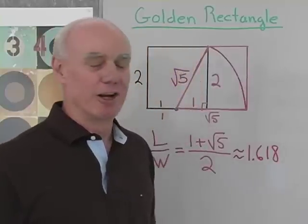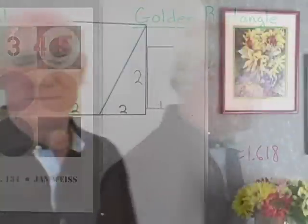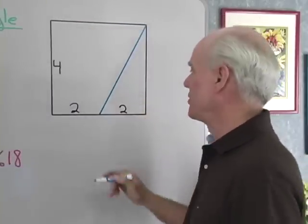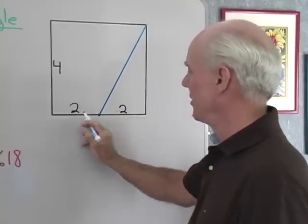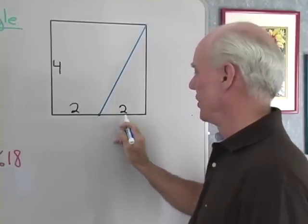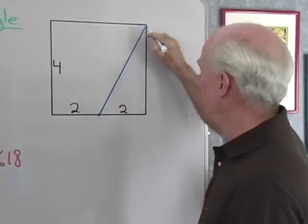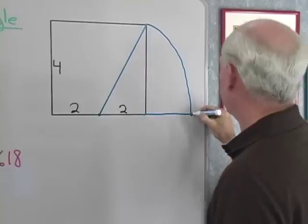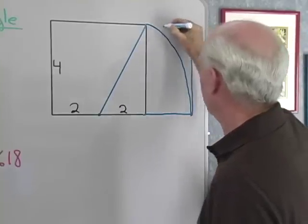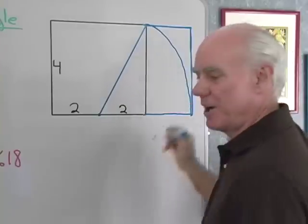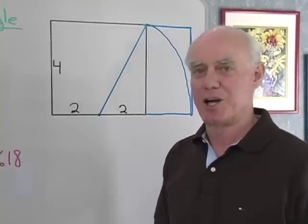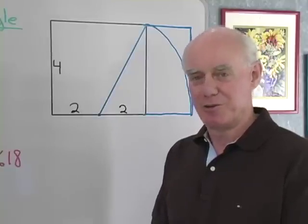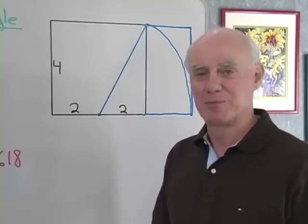Now I want to make a golden rectangle from a square of side 4 rather than a square of side 2. I do the same thing: I go to the midpoint right here, so each of these two lengths is 2, then I draw in this diagonal right here, then drop it down to form this rectangle. That will be another golden rectangle because I've derived it in exactly the same way. That means it's similar to my other golden rectangle, so the ratio of length to width should come out to be the golden ratio.